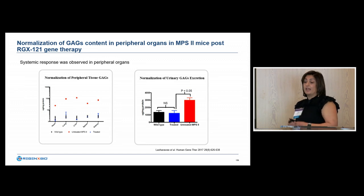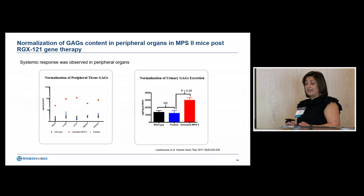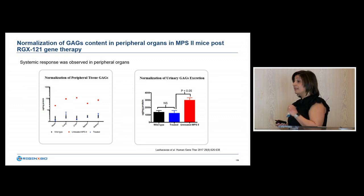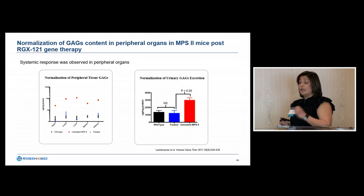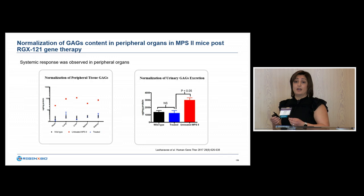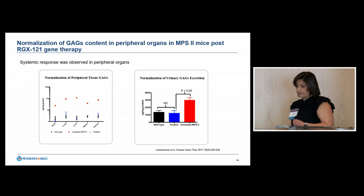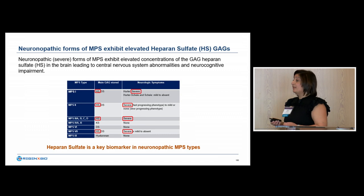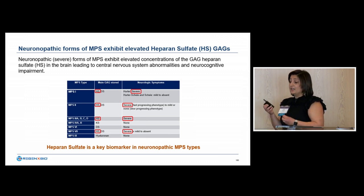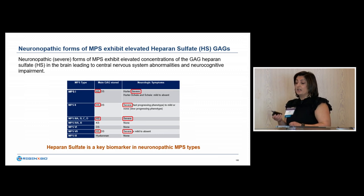We then looked at neurobehavioral assessment using the Barnes Maze tool, measuring spatial learning and memory over six consecutive days. MPS2 treated mice and wild-type mice both improved at escaping the platform each day, whereas untreated MPS2 mice did not improve between days three and six. Although RGX121 is administered into the CNS, it does cross the blood-brain barrier and shows systemic effect — tissue GAGs from various organs were significantly reduced in treated mice to near wild-type levels. Untreated MPS2 mice also excrete large volumes of GAG in urine; we saw normalization of urine excretion in treated mice.